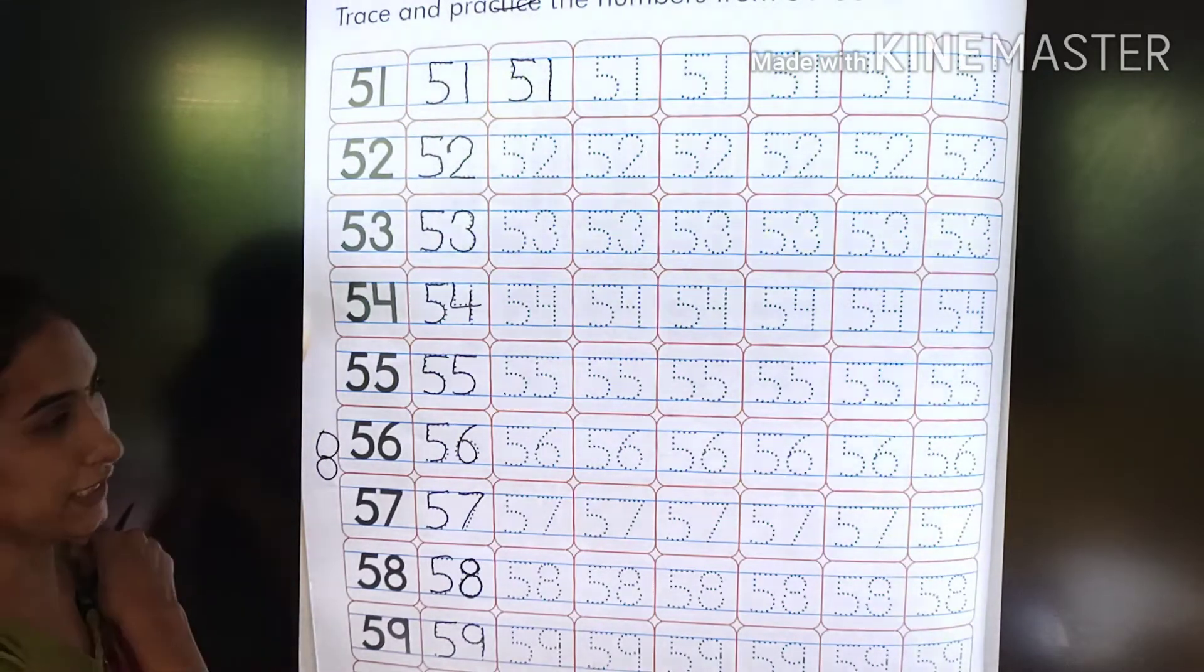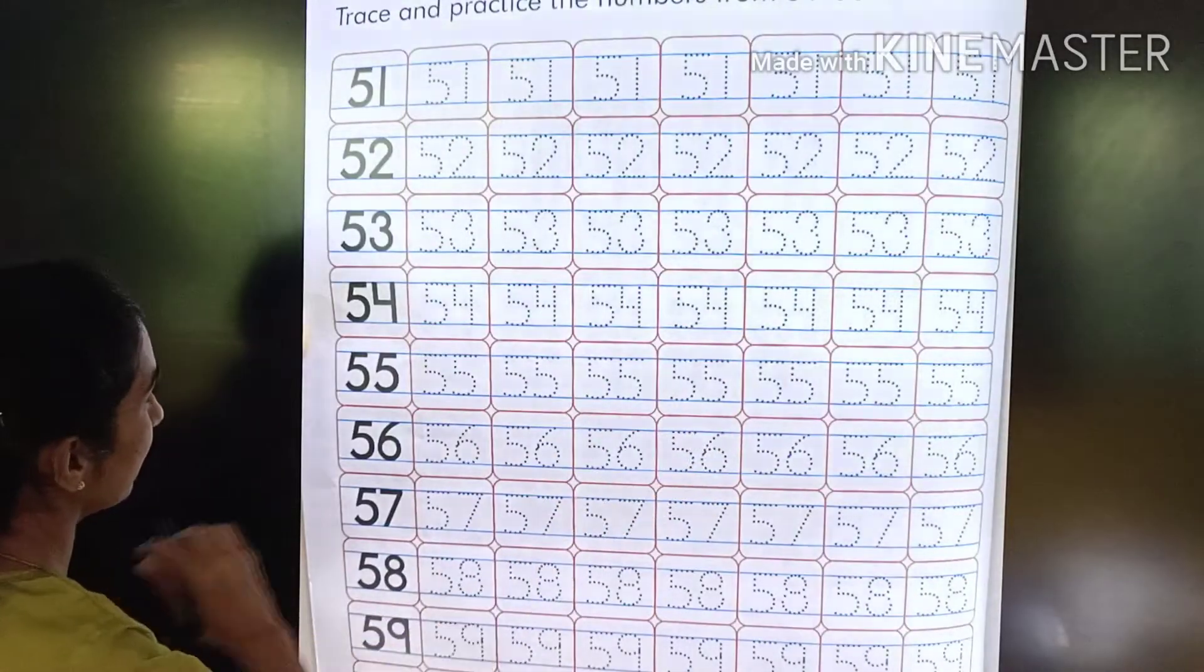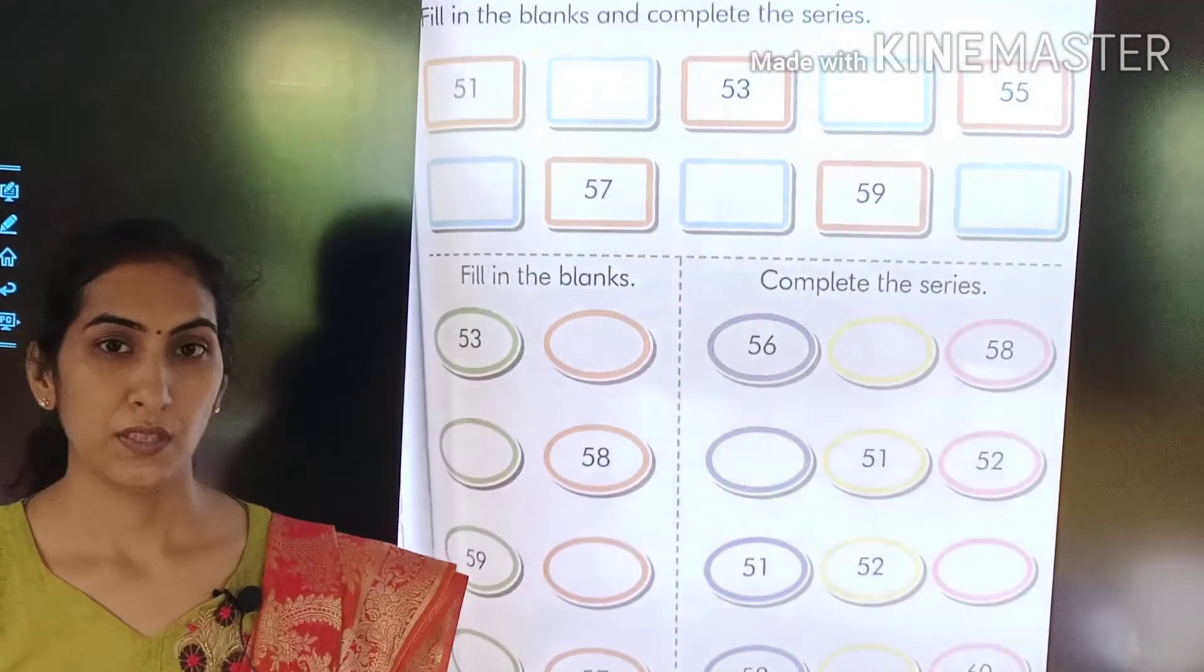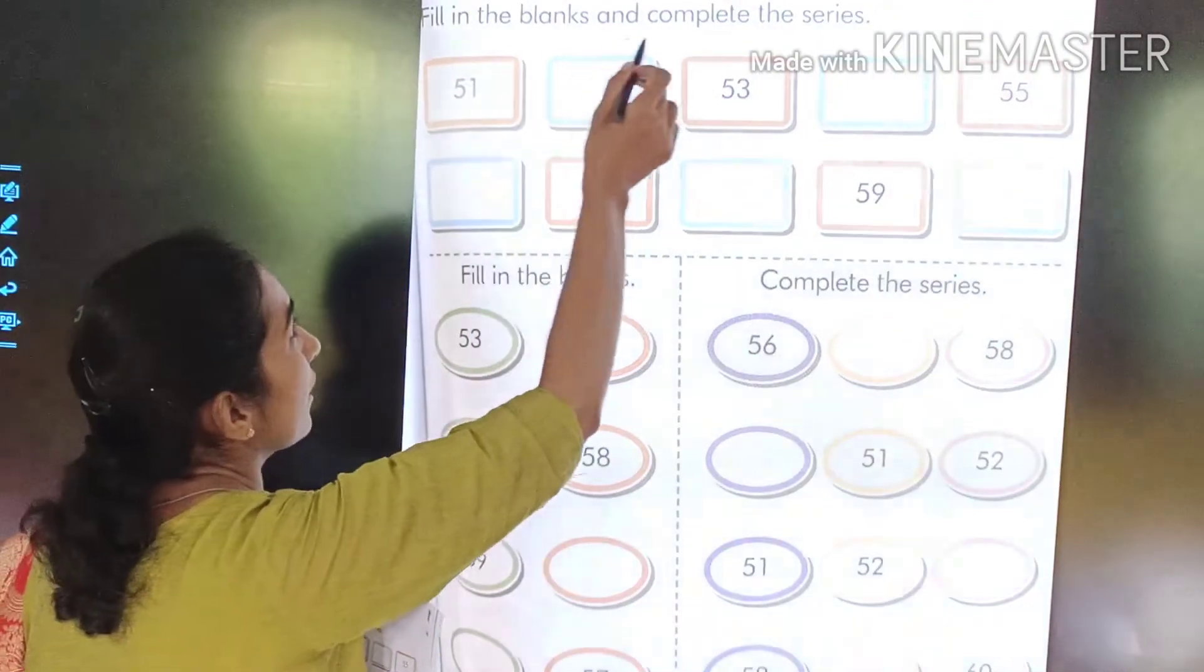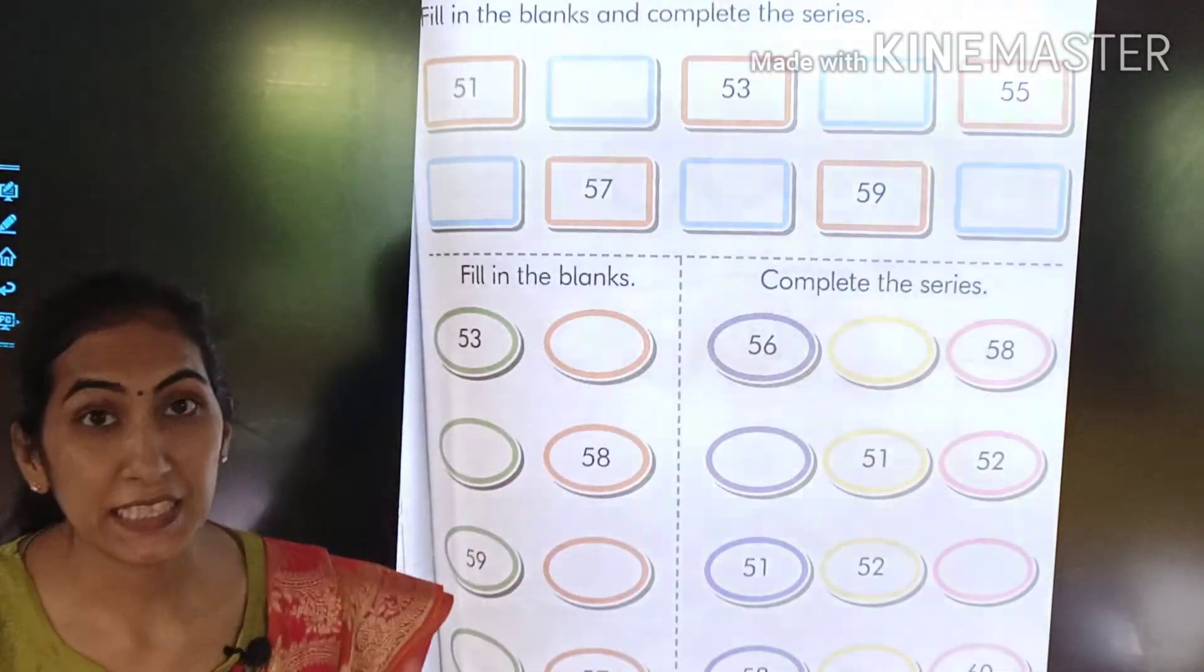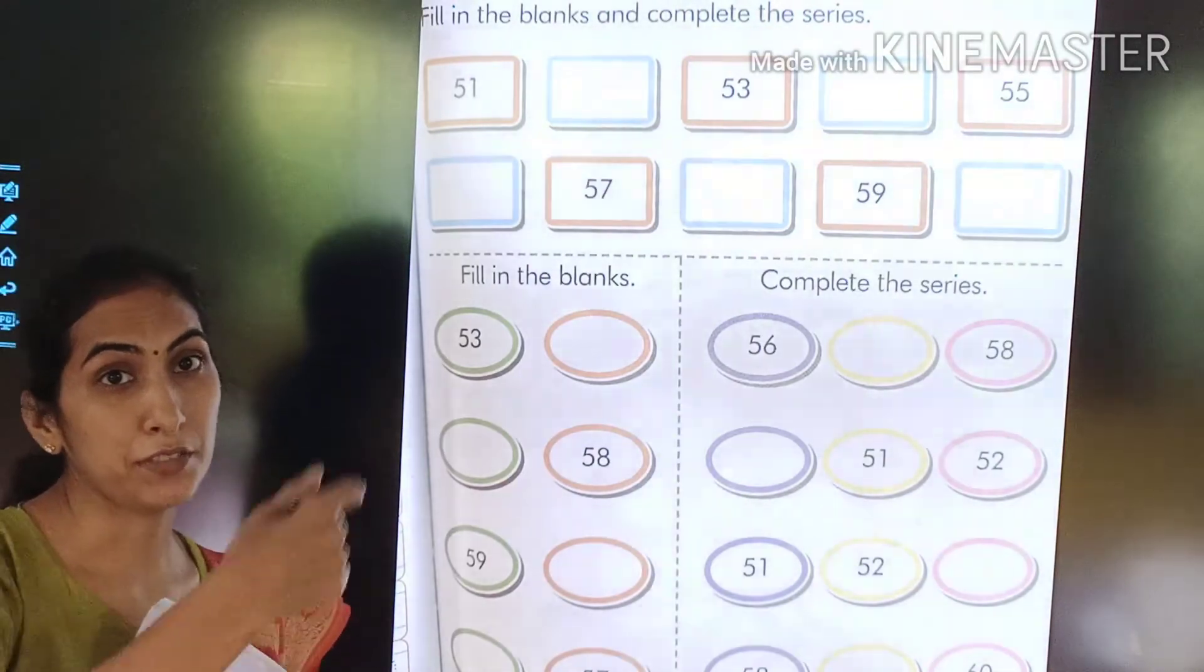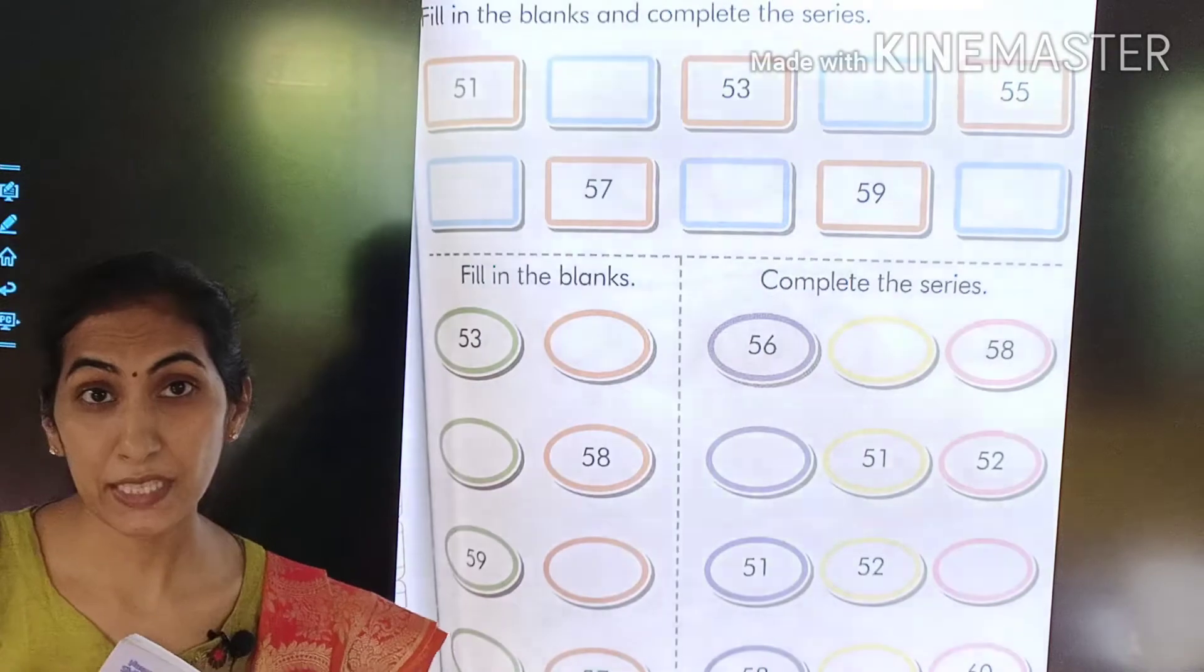So you have to write like this, right? Now, page number 93. See, fill in the blanks and complete the series. Series means forward number: 51, 52, 53, 54. We have done till 51 to 60.